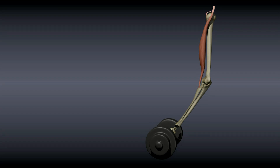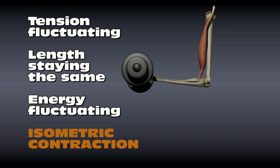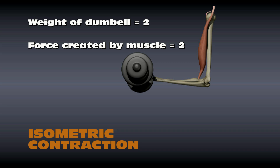In isometric contractions, the muscle length stays the same. The tension across the muscle may change, and the energy required by the muscle may change in order to maintain the length, but the length stays the same. Think of the metric system being used to measure length — isometric maintains an equal length. If this bicep's muscle wants to maintain a constant length, it may require more tension and more energy depending on how much weight is added, but the length stays the same, and the bones the muscle is pulling on don't move.